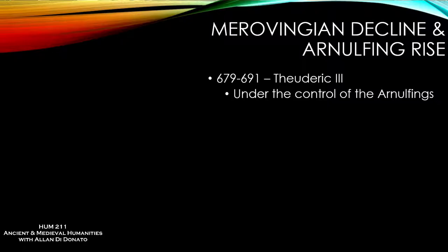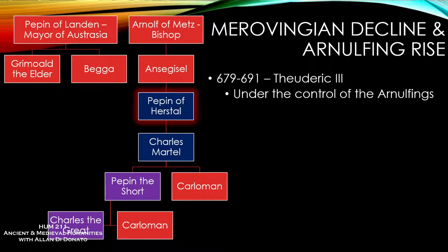King Theuderic III, who reigned from 679 to 691, came under the control of the Arnolfings. To understand this family: on one branch you have Pepin of Landen, who was Mayor of Austrasia and father of Grimoald the Elder. His daughter Bega married Ansegisel, son of Arnulf of Metz — a bishop — which is where the name 'Arnolfing family' comes from. Together Bega and Ansegisel had a child named Pepin of Herstal.